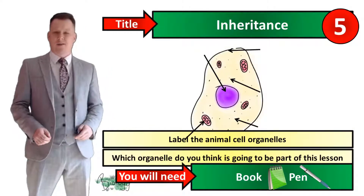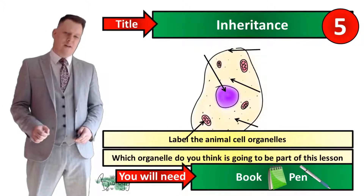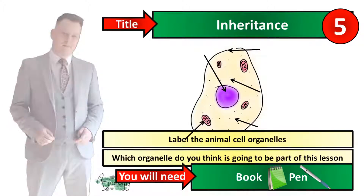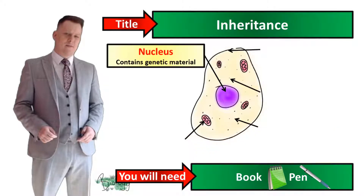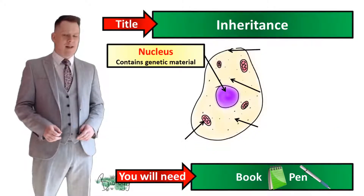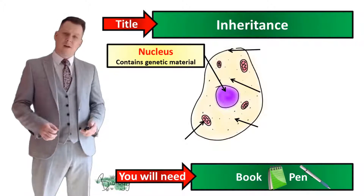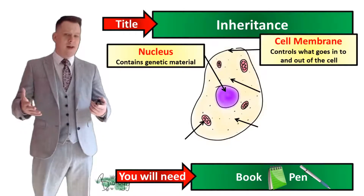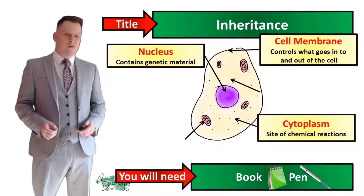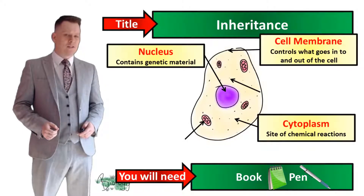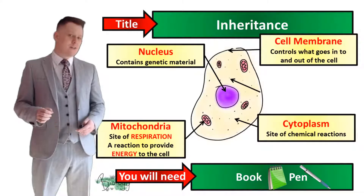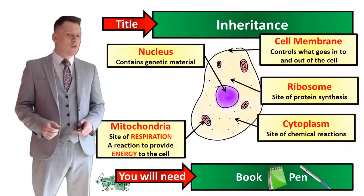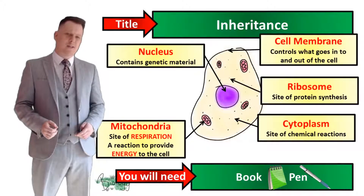I'm going to put five seconds on the clock; if you need more time pause the video, and when you're finished we'll go through the answers together. So let's have a look at this cell. In the middle we've got the nucleus, which contains our genetic material. Around the outside you've got the cell membrane, which controls what goes into and out of the cell. You've got the cytoplasm, which is the site of chemical reactions, the mitochondria, which is the site of aerobic respiration providing the cell with energy, and the ribosomes, which are the site of protein synthesis.